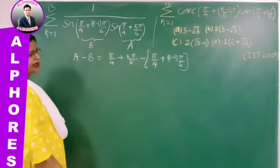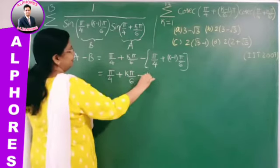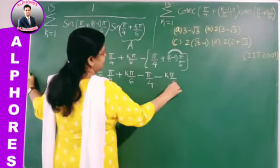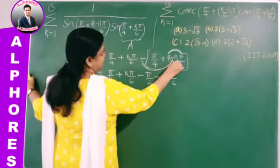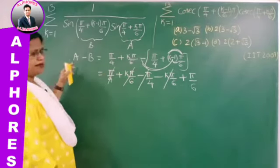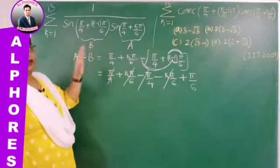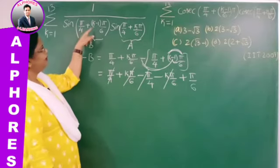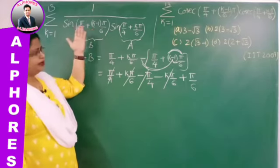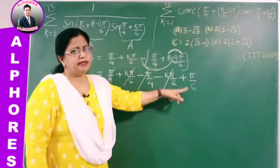Since the difference is always π/6, we multiply and divide by sin(π/6). In the numerator we write sin(π/4 + Kπ/6) minus (π/4 + (K−1)π/6), which equals sin(π/6), independent of K. So this value is taken outside the sigma. The denominator remains sin(π/4 + (K−1)π/6) · sin(π/4 + Kπ/6).